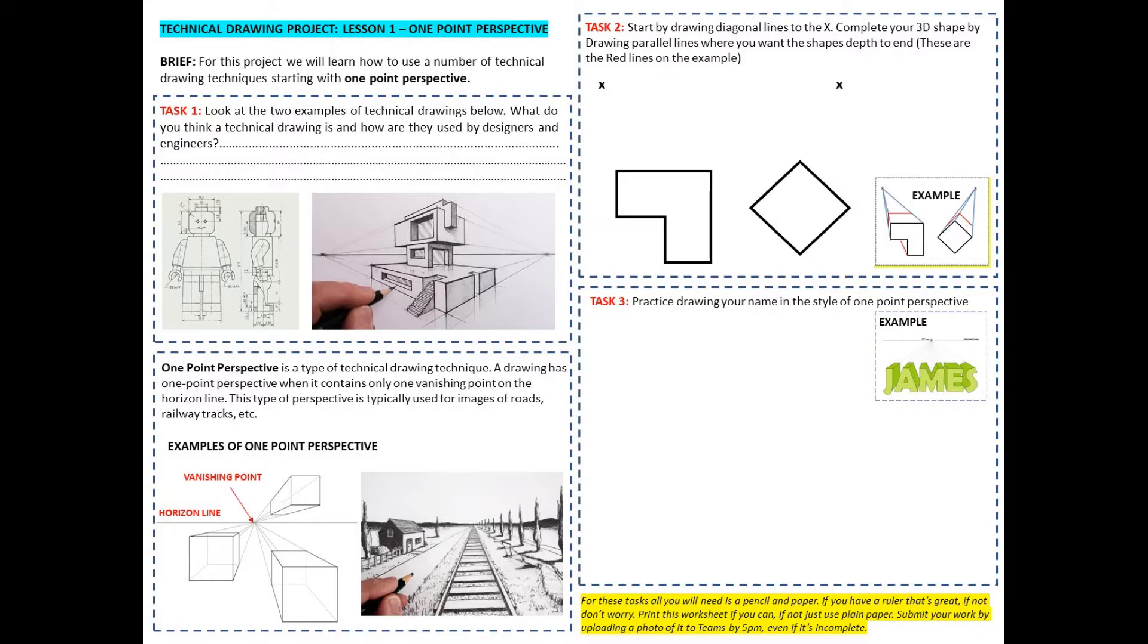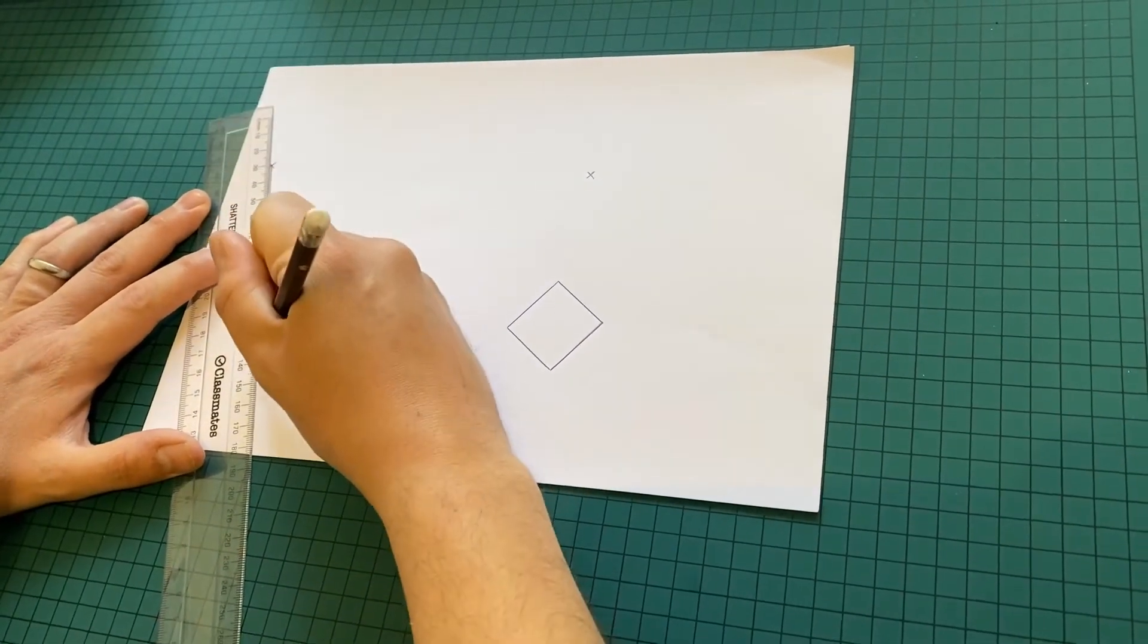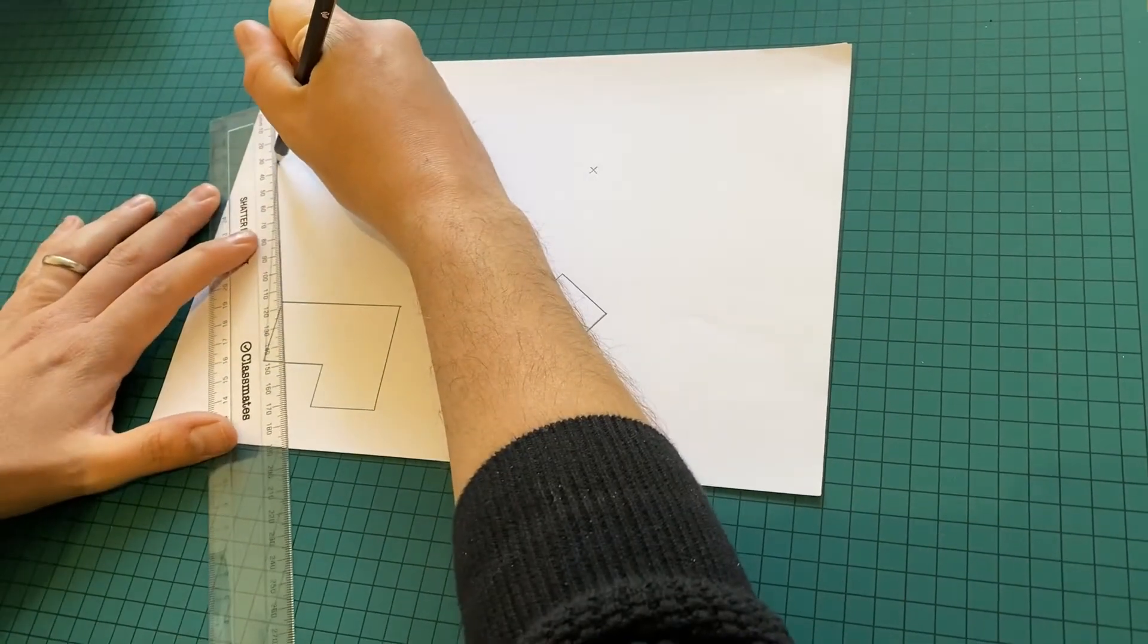On a two point perspective drawing, which we'll be looking at in the next lesson, you would have two vanishing points, but more on that next lesson. For the next task, we're going to have a go at drawing a one point perspective drawing.